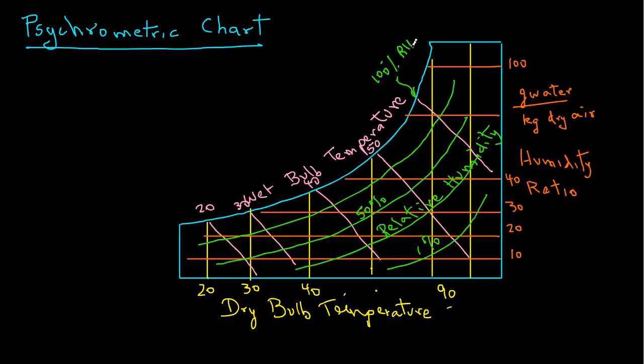Next, we will extend the wet bulb temperature lines in the left hand region. And these are the enthalpy, constant enthalpy lines, units of enthalpy being kilojoules per kilogram dry air. And we can put the unit numbers as 50, 60, 70, and so on.